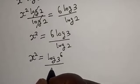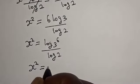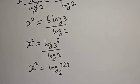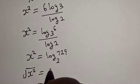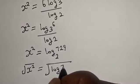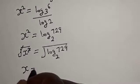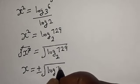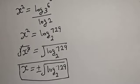Then x squared is equal to log 3 raised to power 6 — that is 729 — base 2. Let's take the square root of both sides. Then x is equal to plus or minus square root of log 729 base 2. That is the value of x for the first method.